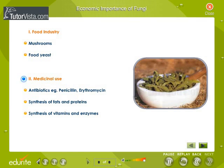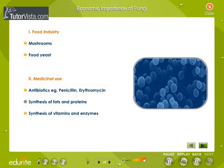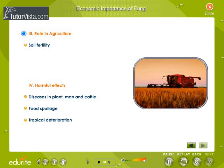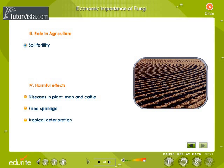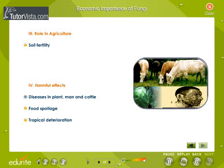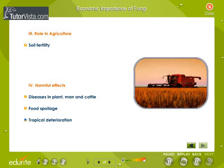In medicine, many types of antibiotics are obtained from fungi. Penicillin and erythromycin are examples of such antibiotics. Certain fungi are used in the synthesis of fats, proteins, vitamins, and enzymes. Fungi are also helpful in maintaining soil fertility in agriculture. However, fungi cause a large number of serious diseases in human beings and plants, spoil food, and also cause tropical deterioration.